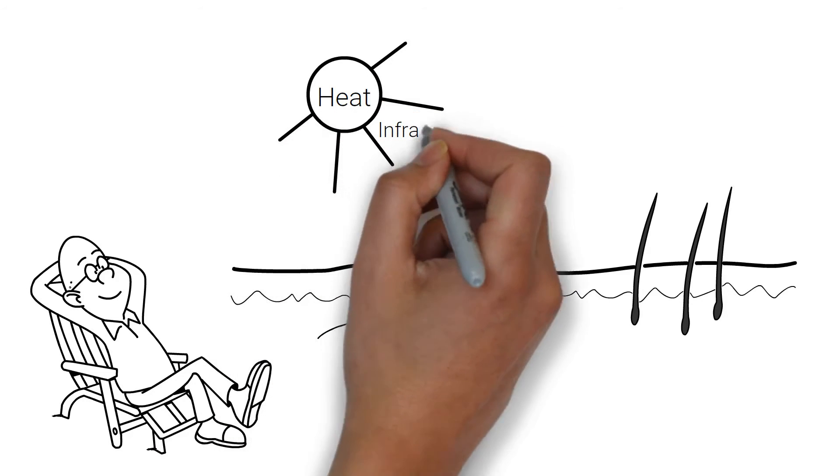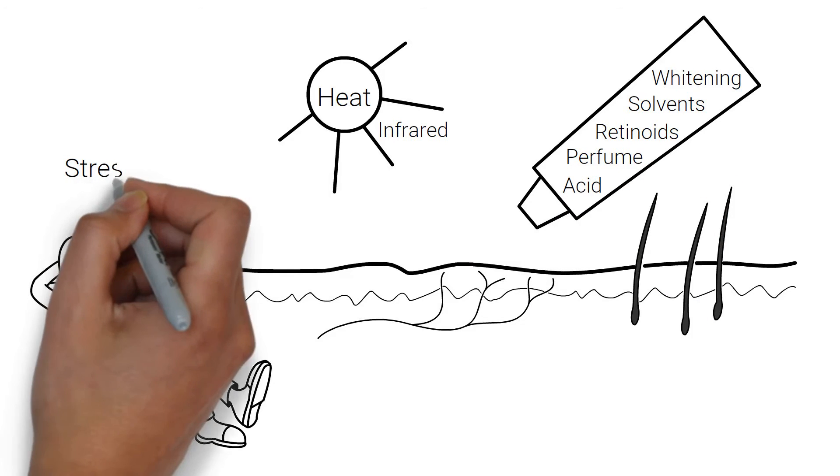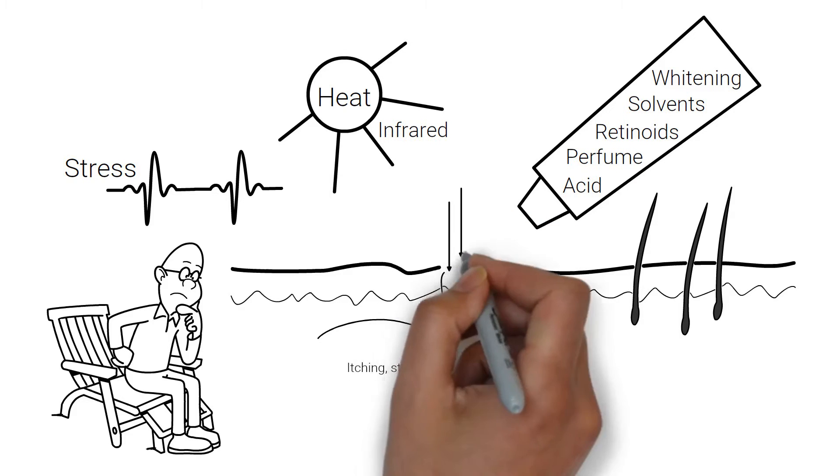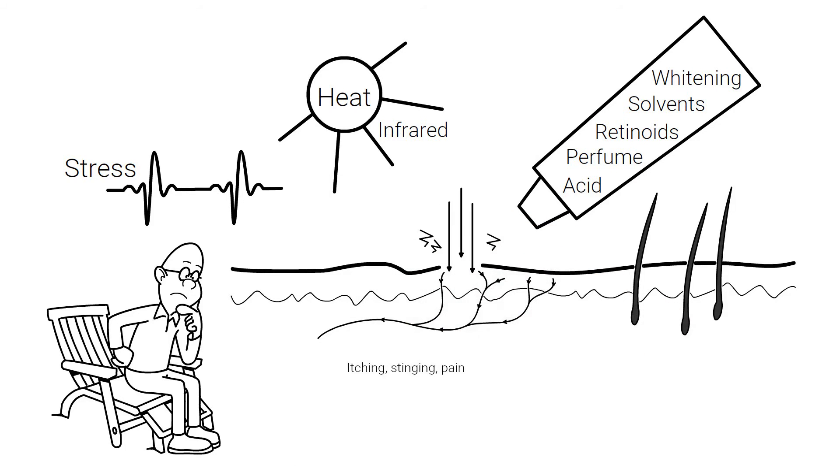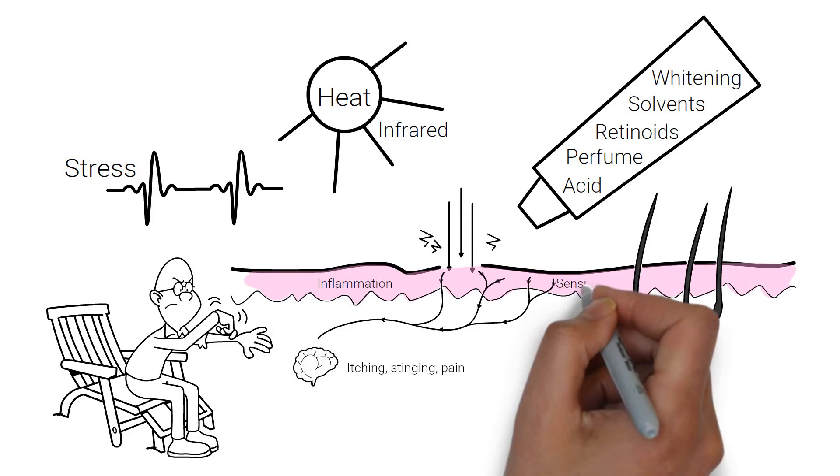Factors such as heat, infrared radiation, chemical compounds, acids and even stress attack our skin and activate the nerve endings. They send signals to the brain and make us feel uncomfortable. The results are chronic inflammation and sensitive skin.